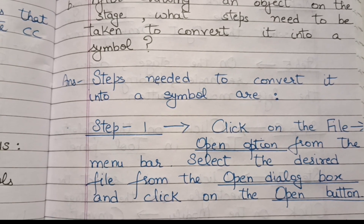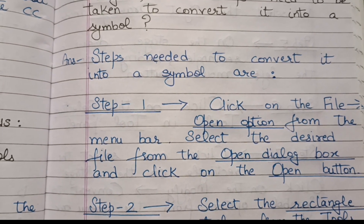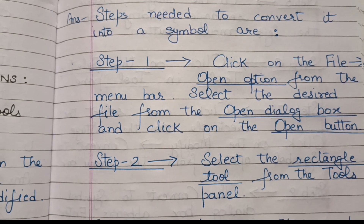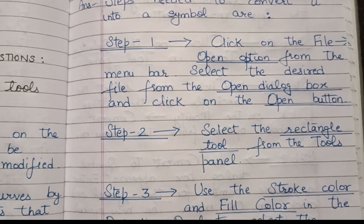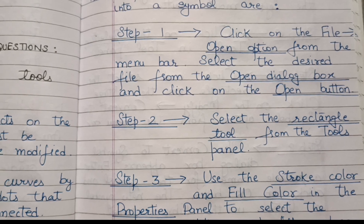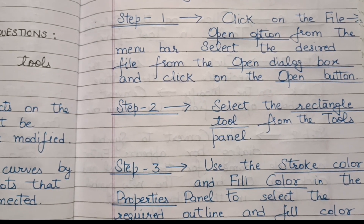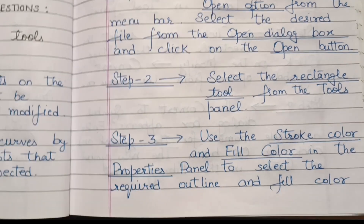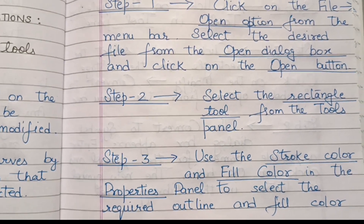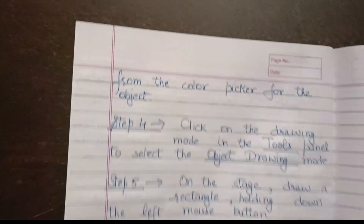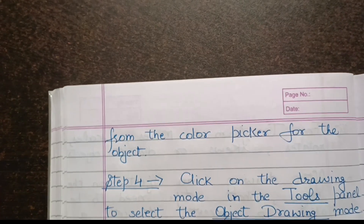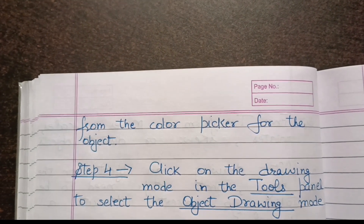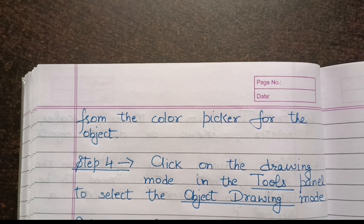Step 2: Select the Rectangle tool from the Tools panel. Step 3: Use the Stroke color and Fill color in the Properties panel to select the required outline and fill color. Step 4: Click on the drawing mode in the Tools panel to select the Object Drawing mode.